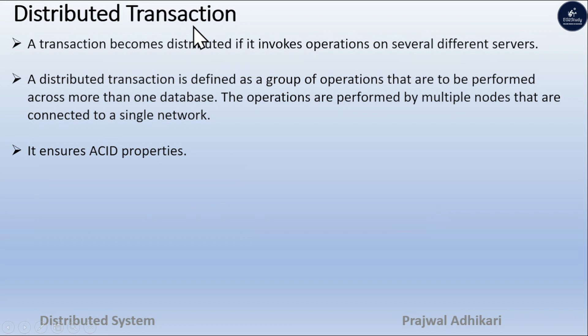Distributed Transaction: A transaction becomes distributed if it invokes operations on several different servers. A distributed transaction is defined as a group of operations that are to be performed across more than one database. The operations are performed by multiple nodes that are connected to a single network. It ensures ACID properties of the transactions.